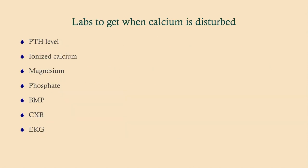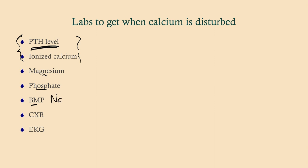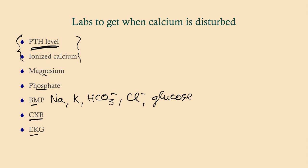These are the labs you should get when calcium is disturbed. If you have a patient with an abnormal serum calcium, the two very first things you should do is get a PTH level and ionized calcium — the PTH level is the most important next step. You're not going to be ordering one test at a time, so anytime one electrolyte is off — sodium, potassium, bicarb, calcium, magnesium — you want to order all your electrolytes. Get a magnesium, a phosphate, a BMP. It also has your renal function tests. A chest x-ray may be useful, and an EKG may be useful as well.